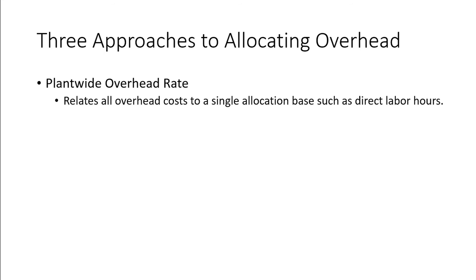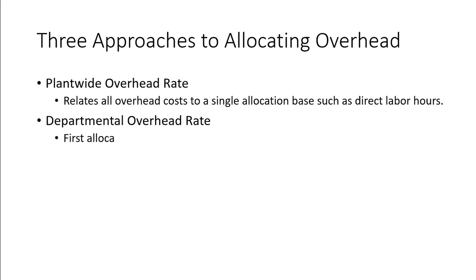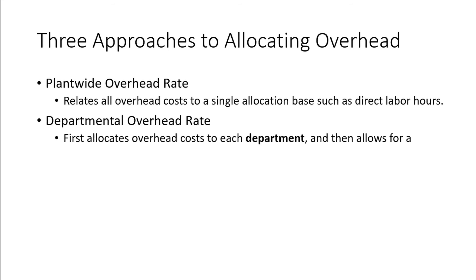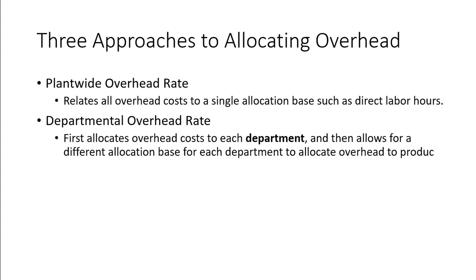A second method is called the Departmental Overhead Rate. This method first allocates overhead costs to each department, and then allows us to use a different allocation base to allocate overhead for each department. So maybe in Department 1 the overhead is allocated based on labor hours, and then in Department 2 overhead is allocated based on machine hours.